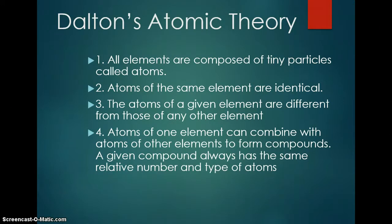And then he said atoms of one element can combine with atoms of another element to form compounds, and a given compound always has the same relative number and type of atoms. So atoms of hydrogen can combine with atoms of oxygen to form water, and the formula for water will always be H2O. It will never be some other combination. Carbon can combine with oxygen to make carbon dioxide, and the formula for carbon dioxide will always be CO2. If it's carbon and one oxygen, you would have carbon monoxide, which is a different compound.